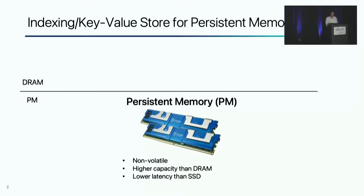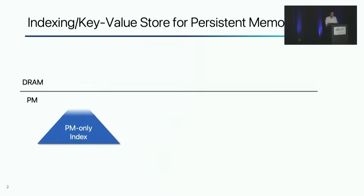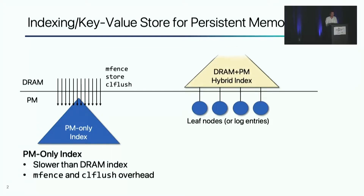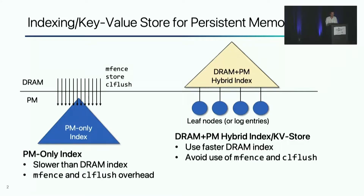In the past few years, various byte-addressable persistent indexing structures have been developed, and some of the persistent indexes store all indexing elements in persistent memory. But PM-only indexes are slower than DRAM indexes, and they frequently call memory fences and cache line flushes for crash consistency. To avoid this overhead, DRAM plus PM hybrid indexes store only leaf nodes in persistent memory and most of the indexing elements in DRAM. The volatile indexing elements can be reconstructed, but the recovery cost is very high.